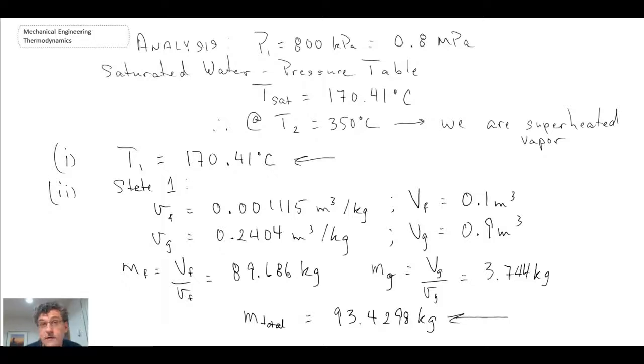The next thing they ask us to do is to determine the final volume when we're at state two. So final volume. So what do we know there? We know that the pressure is 800 kPa, and we know that the temperature there is 350 degrees C.